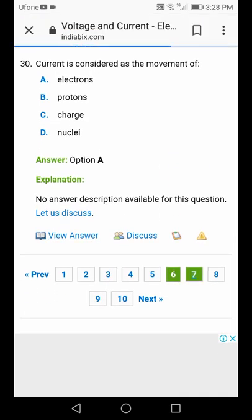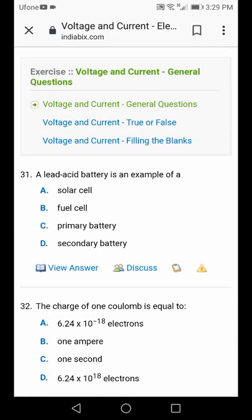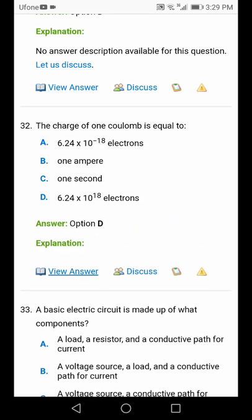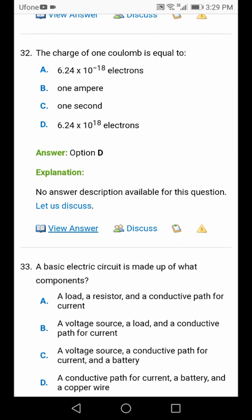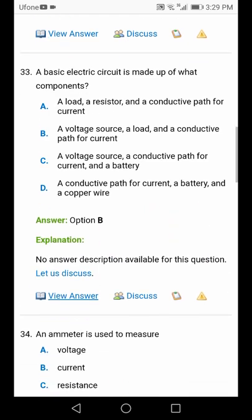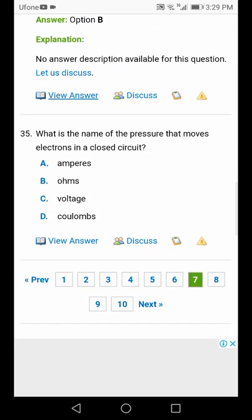Page number 7: Battery that is rechargeable is secondary battery. The charge of 1 coulomb equals 1 divided by 1.602 times 10 to the minus 19, option D. Basic electric circuit should have a voltage source and a conductive path for current, option B.